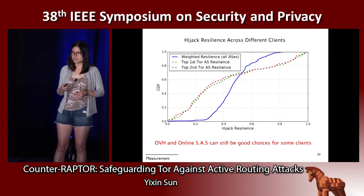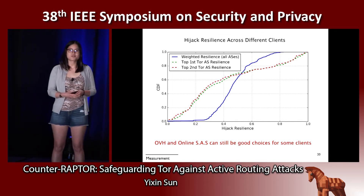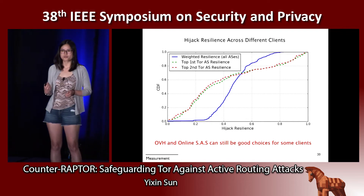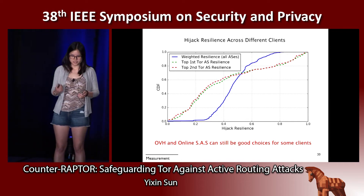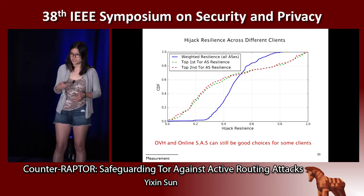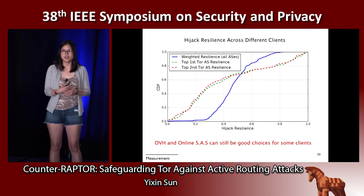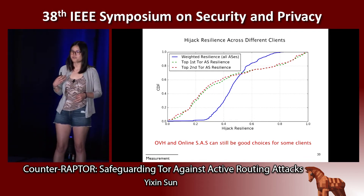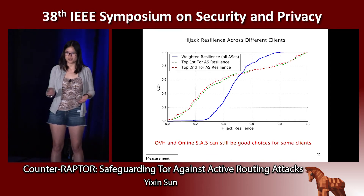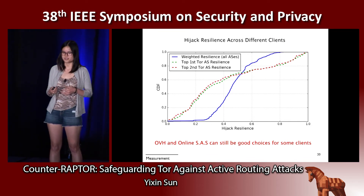This provides the key insight for our guard relay selection work: we should consider this new notion of resilience when picking a Tor relay. Besides hijack resilience, we also present results for resilience to interception attacks in our paper. Interception is actually a more sophisticated attack than hijacks — refer to the paper for details.